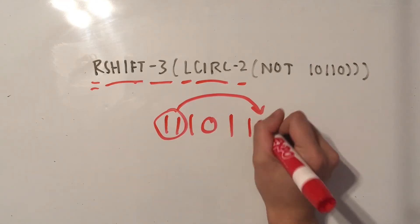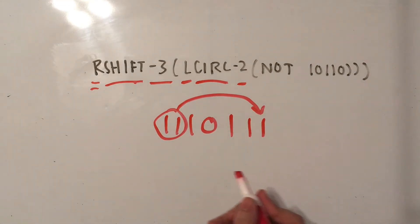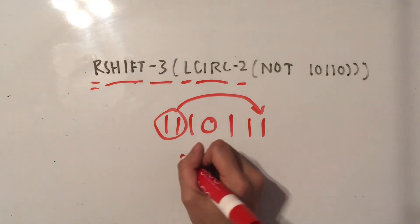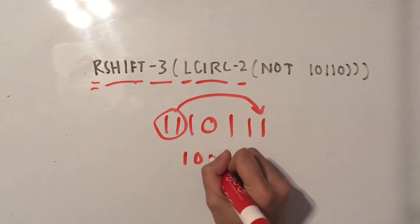So we had 11, and those 2 1's are going to go on the right side. So now we have 10111.